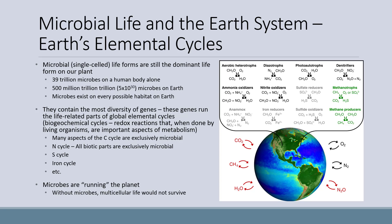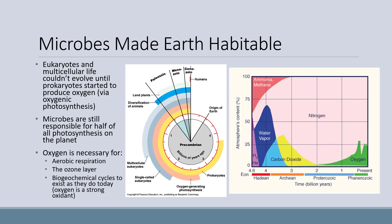What I'm saying is that microbes are running the planet. Without microbes, multicellular life would not survive. Microbes also made the Earth habitable for other organisms in the first place. Eukaryotes and multicellular life couldn't evolve until prokaryotes started to produce oxygen via oxygenic photosynthesis. Today, microbes are still responsible for half of all photosynthesis on the planet. Oxygen is necessary for aerobic respiration, the ozone layer, and for biogeochemical cycles to exist as they do today. Oxygen is a very strong oxidant, and many chemical compounds for different elements would not exist without it.